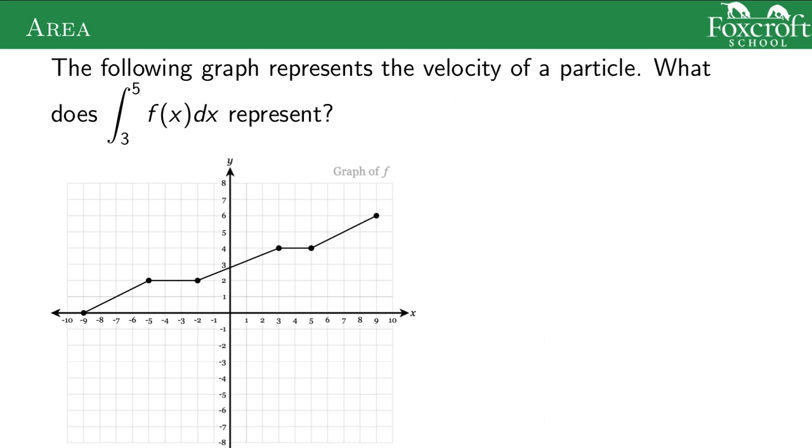The following graph represents the velocity of a particle at time t. I guess it doesn't make sense because it's got negative values, but whatever. So the velocity, let's just say it's like miles per hour and hours. What does the area from 3 to 5 of f(x)dx represent? So it's this area here, that's 2 by 4, so it's an area of 8.